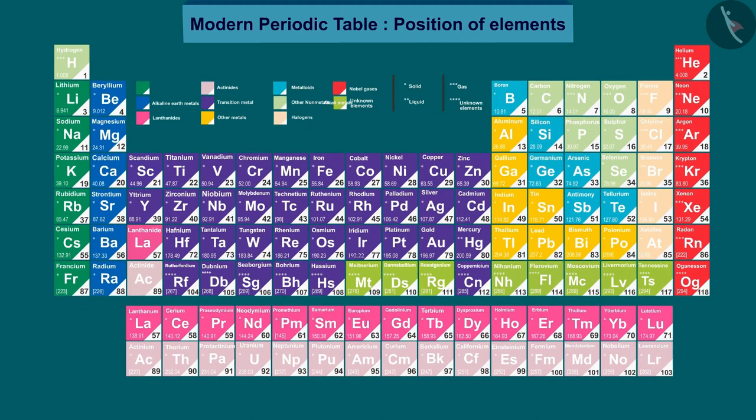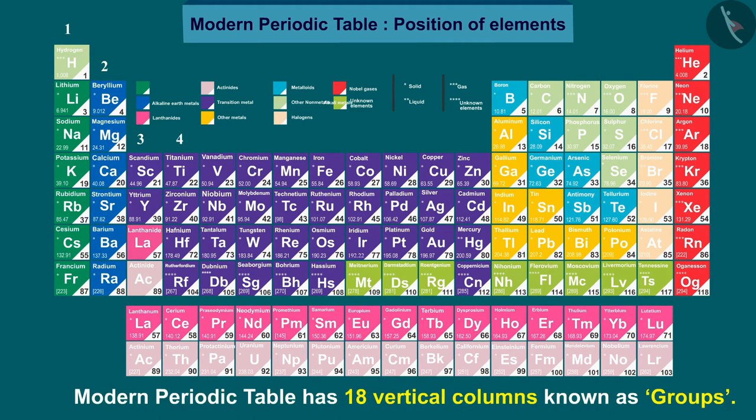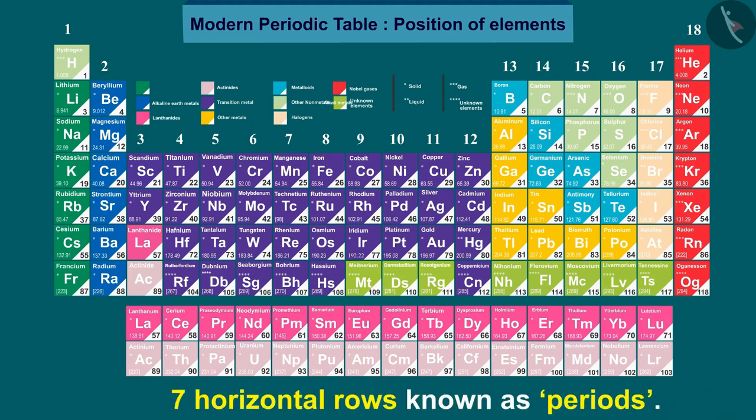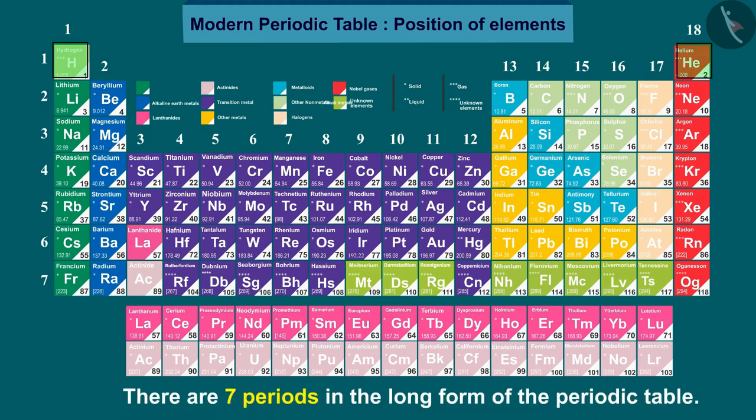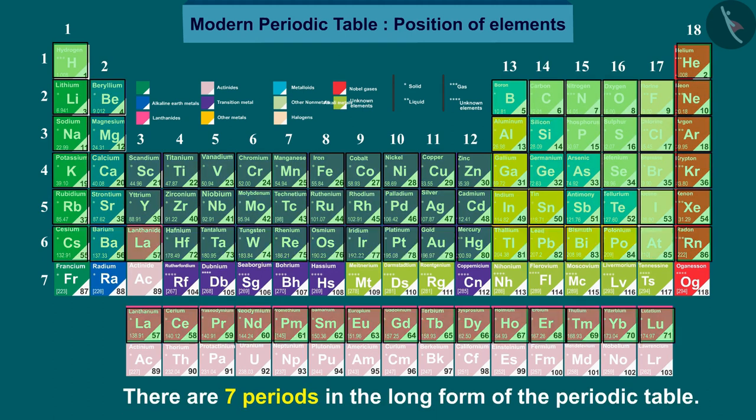Let us now discuss the position of different elements in the modern periodic table. The modern periodic table has 18 vertical columns known as groups and seven horizontal rows known as periods.